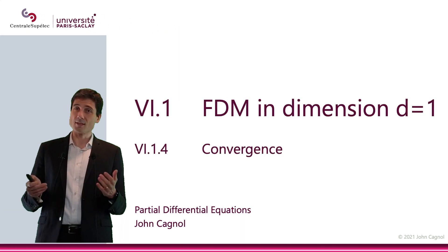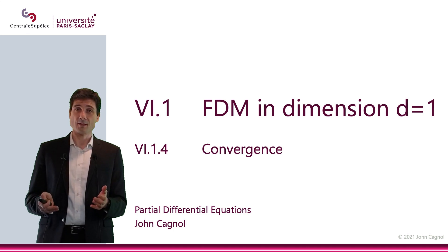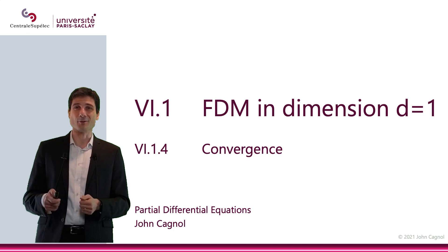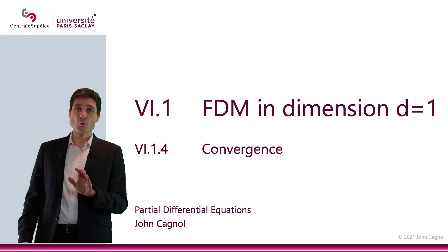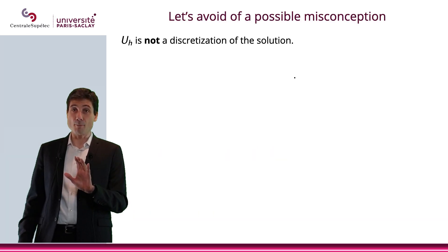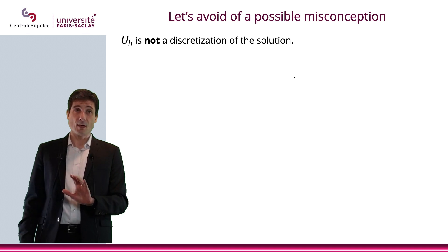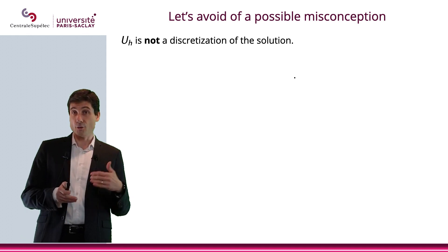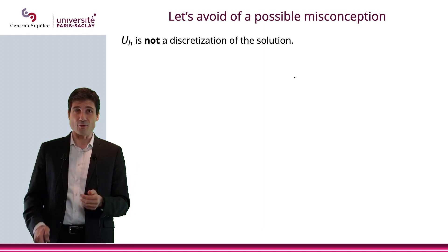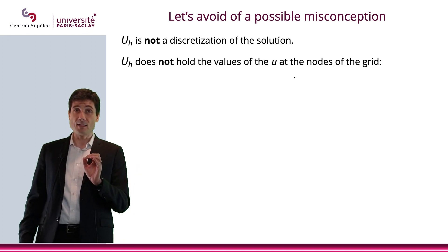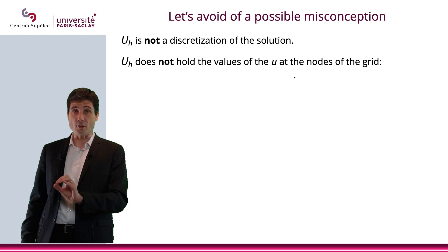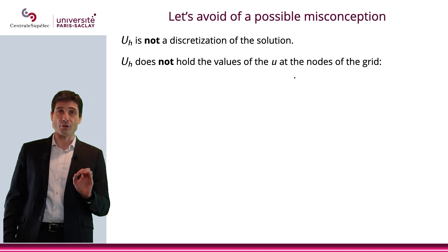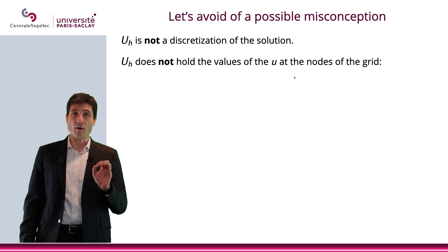In this video, we're going to discuss the convergence of the method, and we're also going to put together the program to approximate the solution. Let's start with pointing out that there is a possible misconception at this point. I would like to emphasize that u_1 to u_j is not a discretization of the solution — it does not hold the values of u at the nodes of the grid.